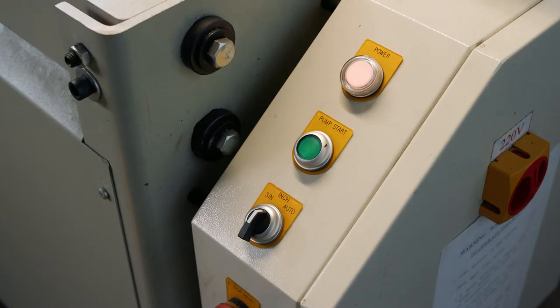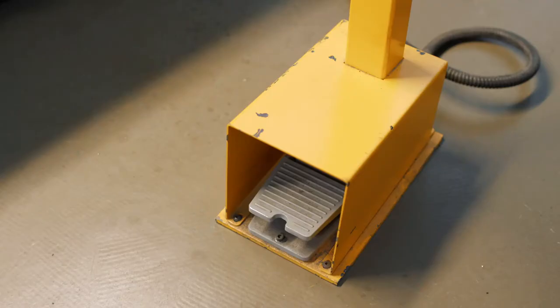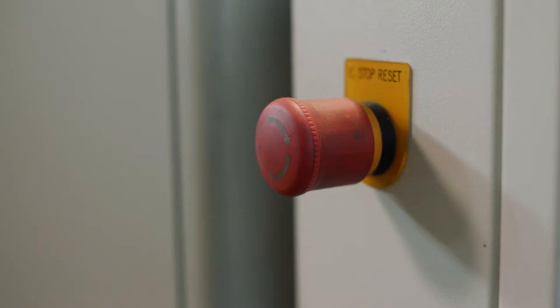The green button turns the system on. A foot pedal on a moveable control unit operates the blade. There are two stop buttons, one on the foot control unit and one on the main control panel.